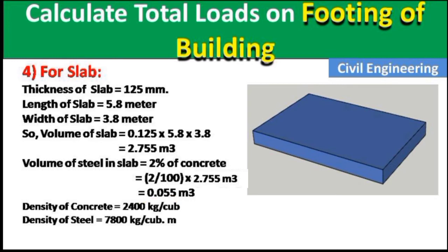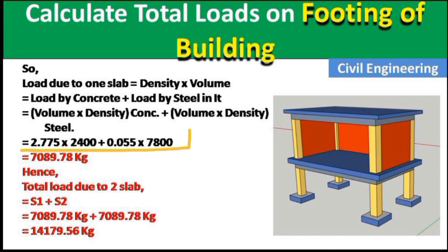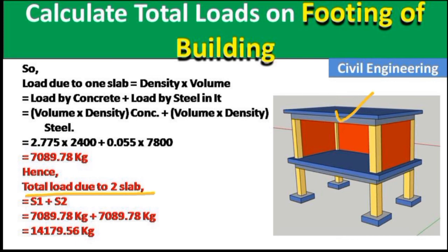Density of concrete = 2400 kg/m³, density of steel = 7800 kg/m³. Load due to one slab = (Volume of concrete × Density) + (Volume of steel × Density) = 7089.78 kg. We have two slabs (S1 and S2) of the same size, so total load due to two slabs = 7089.78 × 2 = 14,179.56 kg.